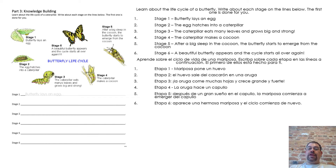Stage 5: After a big sleep in the cocoon, the butterfly starts to emerge from the cocoon. Stage 6: A beautiful butterfly appears and the cycle starts all over again.